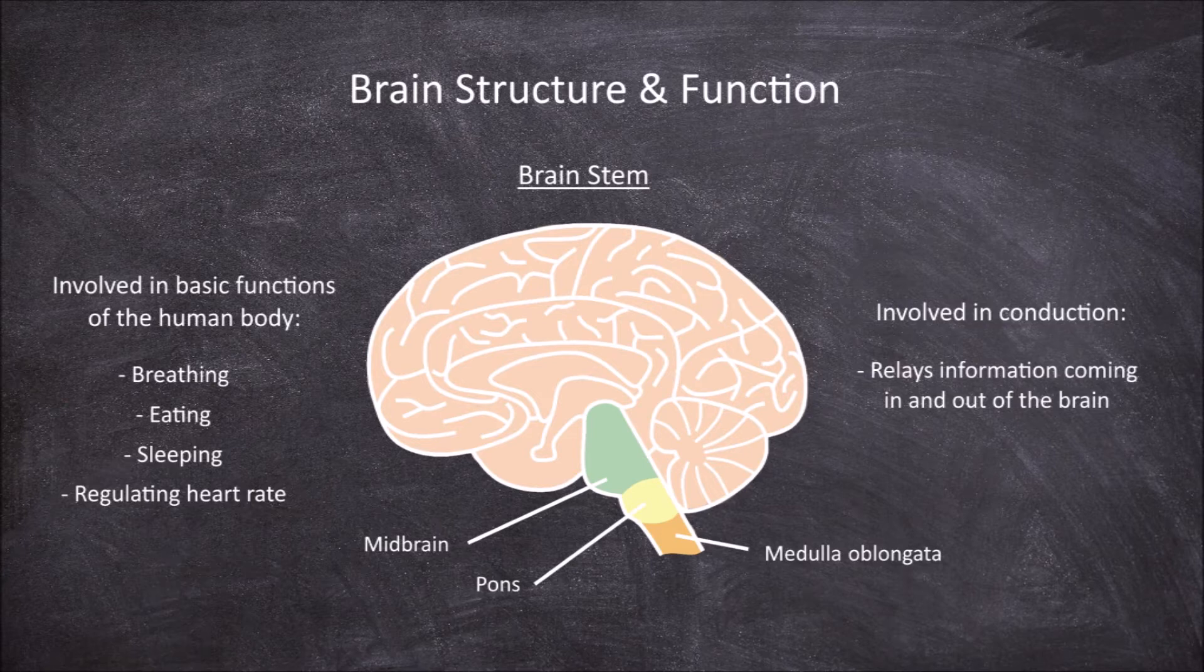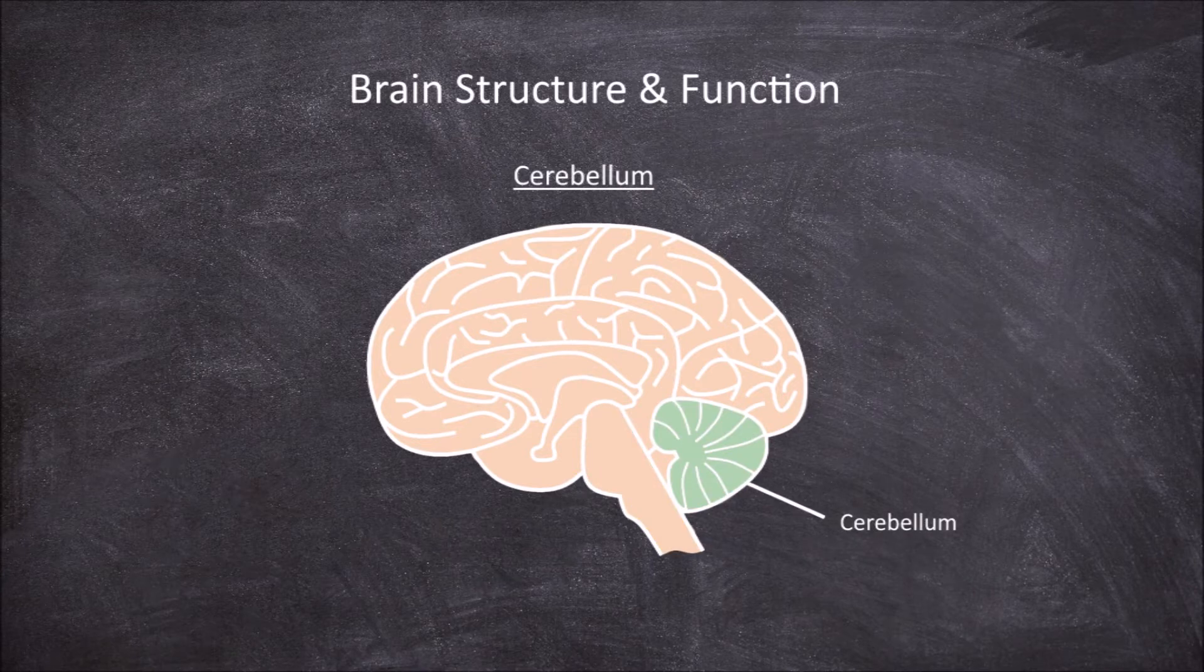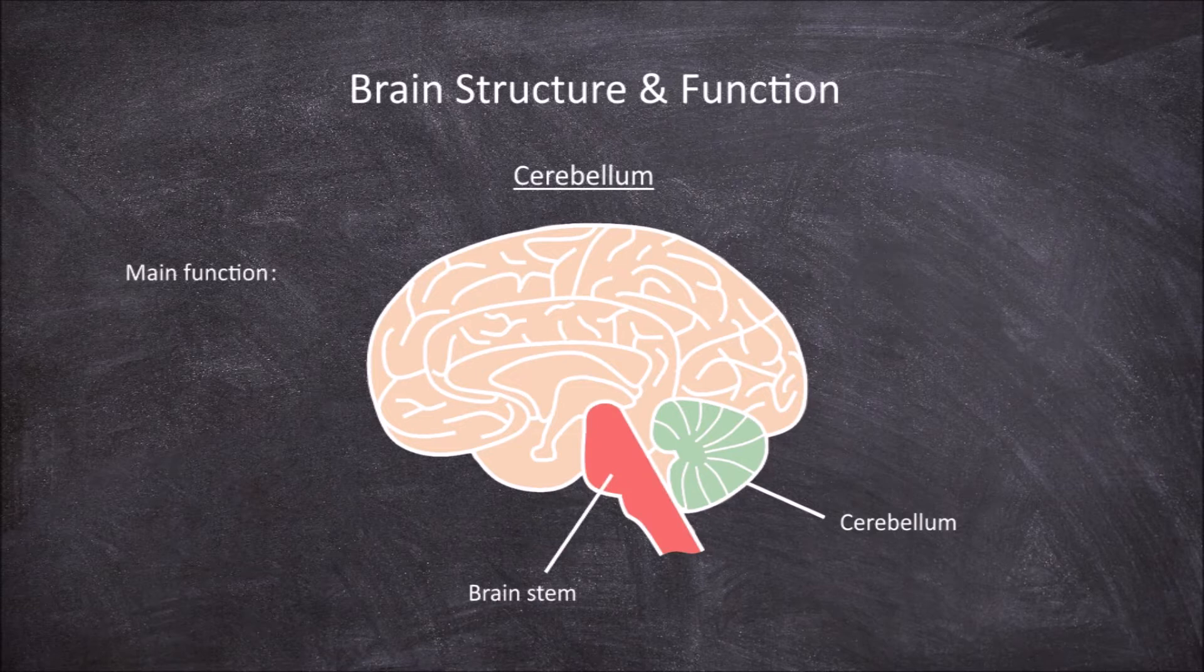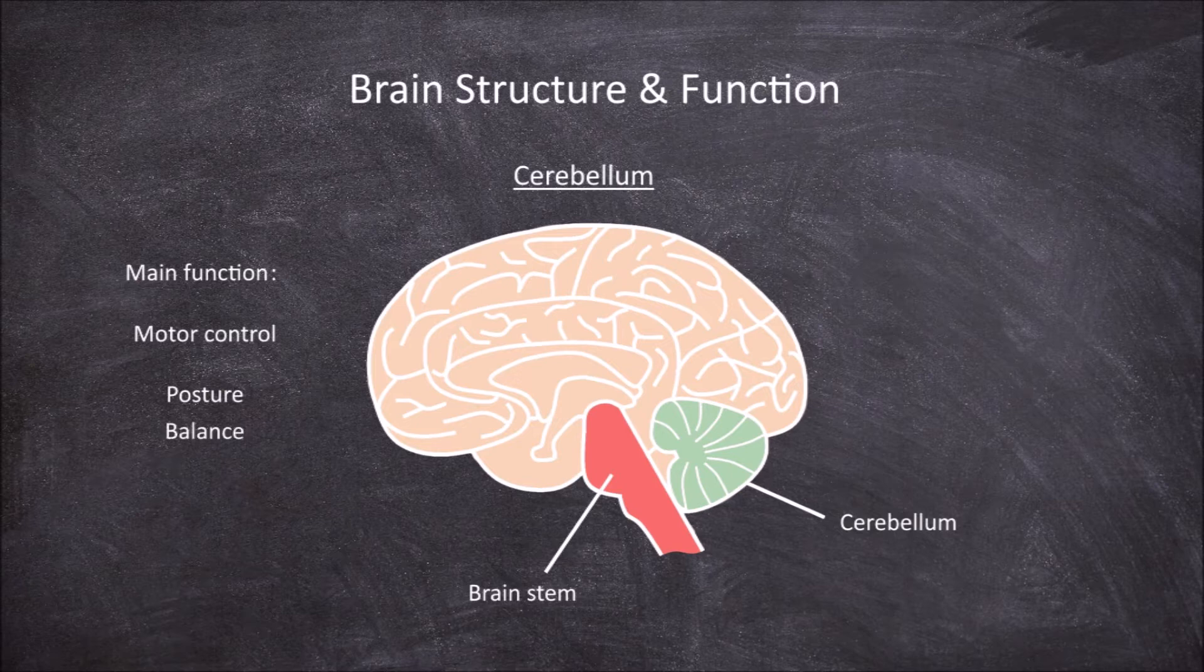The next part of the brain is the cerebellum. The cerebellum is found behind the brain stem. The main function of the cerebellum is in motor control, such as in maintaining posture, balance, and coordination, as well as in motor learning.